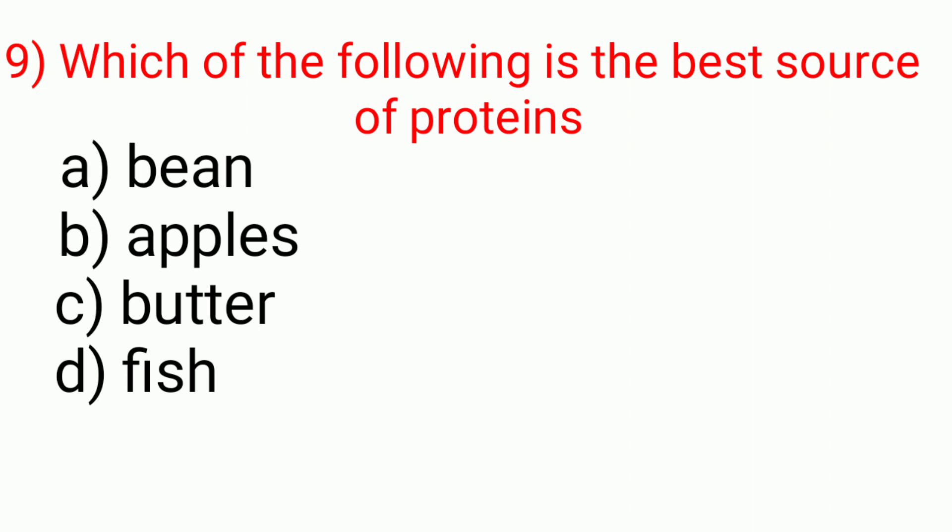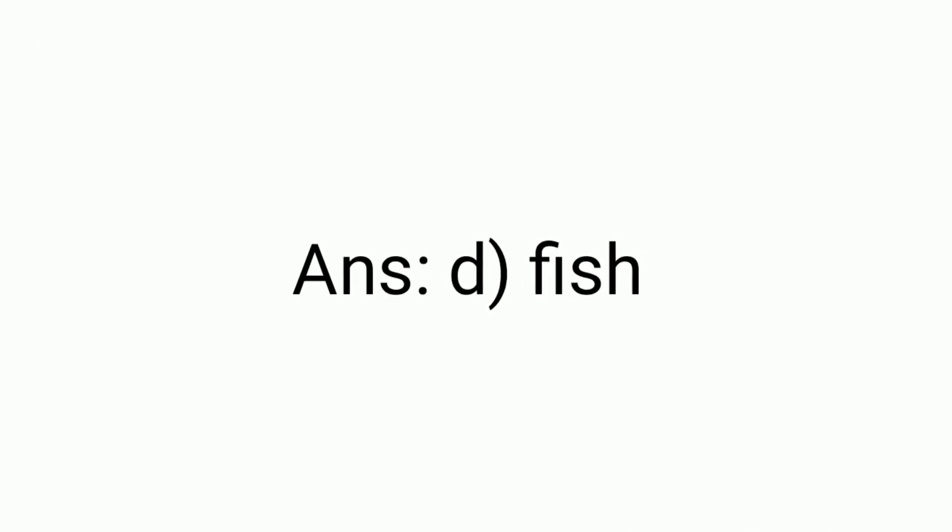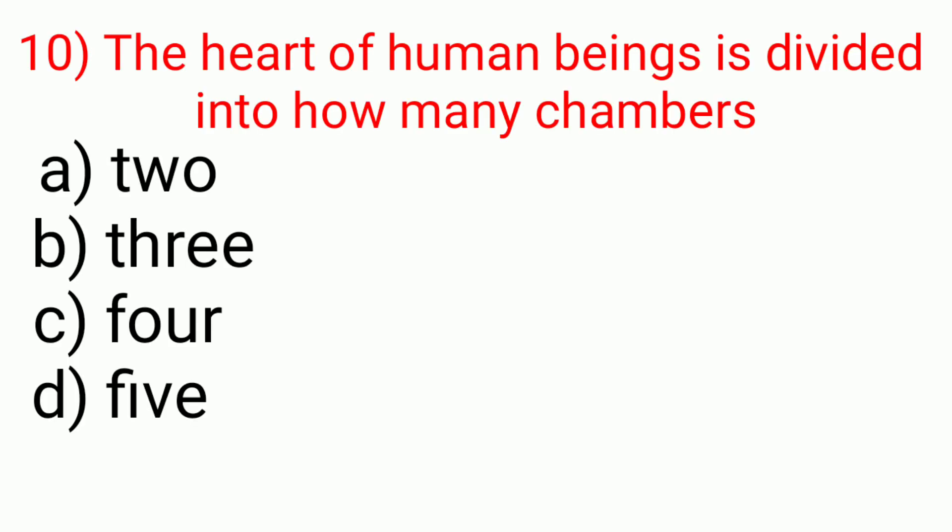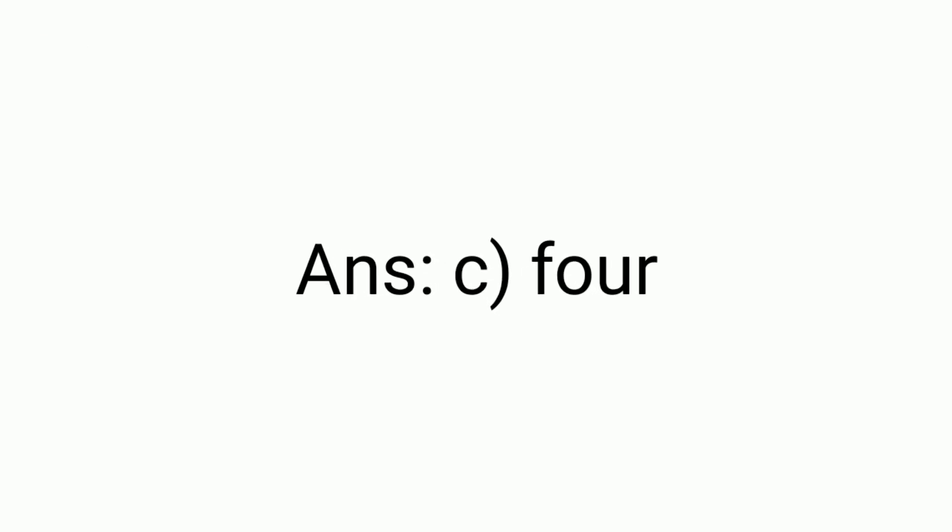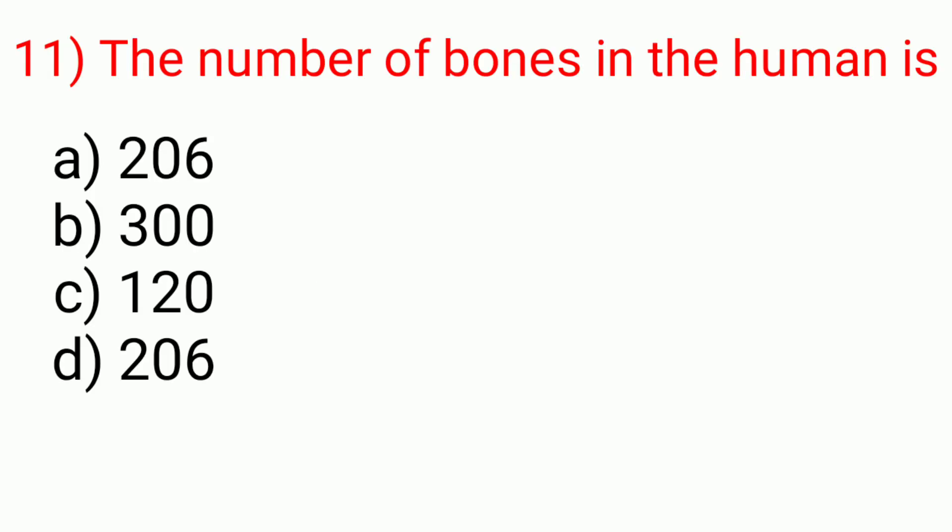Question number nine: Which of the following is the best source of proteins? Answer is D, fish. Question number ten: The heart of human beings is divided into how many chambers? Answer is C, four.